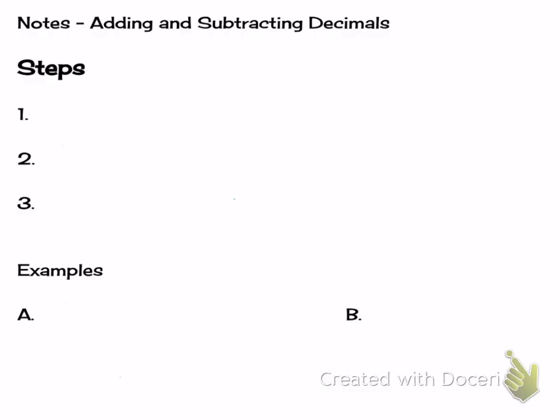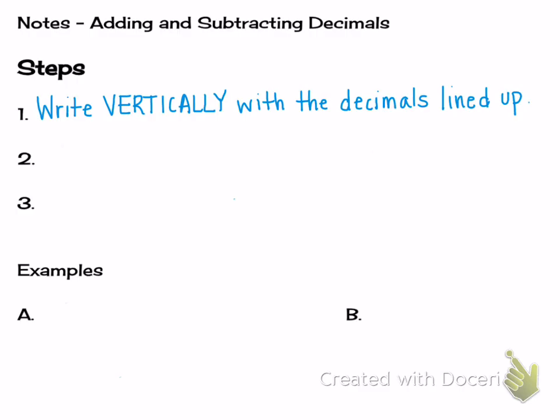The first step when you add and subtract decimals is you have to make sure that you write the decimals vertically, and then make sure that you actually line the decimals up. It's very important that you line up the decimals because you have to have your place values lined up when you add and subtract.